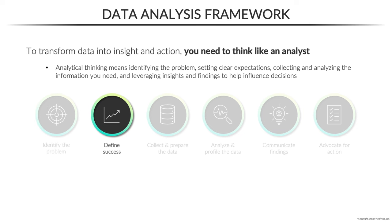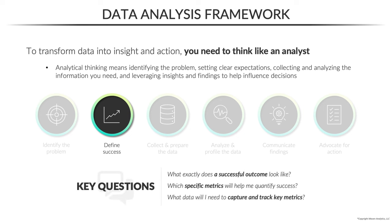The second step in the framework is all about defining success, and this is where things like measurement planning come into play. It's about asking yourself what exactly does a successful outcome look like for the business — is it driving more revenue, increasing employee retention rates, driving better marketing ROI? And then once you define success, which specific metrics or KPIs will help you quantify it? And what data will you need to capture to track those key metrics? That will set you up with a crystal clear roadmap for measuring the success of your efforts.